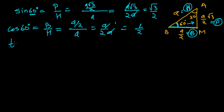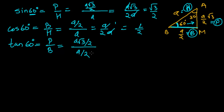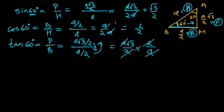Now let's find out tan 60. Tan equals perpendicular upon base. Perpendicular is A root 3 upon 2, and base is A upon 2. So tan 60 = (A root 3 upon 2) upon (A upon 2). The 2s cancel and the As cancel, leaving just root 3.